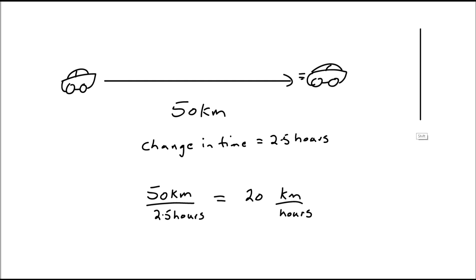If we said that the car had moved 50 kilometers in 2.5 hours to the east, then it would be a vector quantity, as it has a magnitude, 20 kilometers per hour, and a direction to the east.